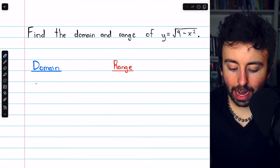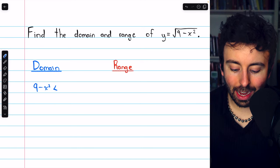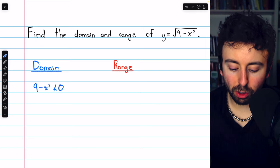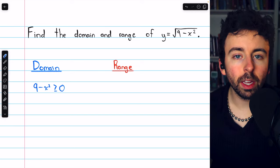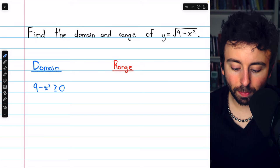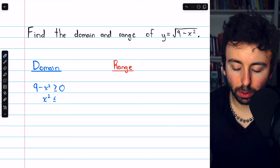So to find the domain, we know that 9 minus x squared, since it's in the square root, cannot be negative, which means it must be greater than or equal to 0. We can then solve for x.